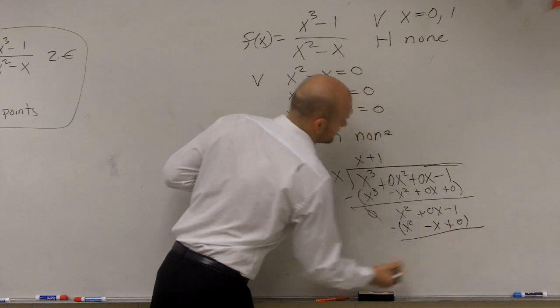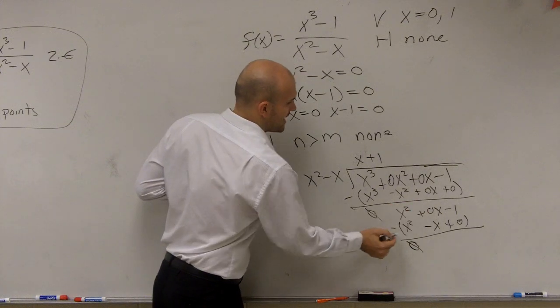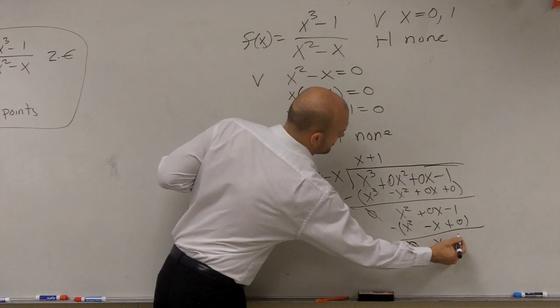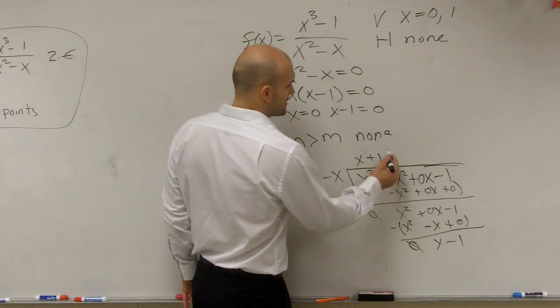Subtract. x squared minus x squared is 0x squared. 0 minus a negative x is positive x minus 1. Does x squared go into x? No. So that's now going to be our remainder.